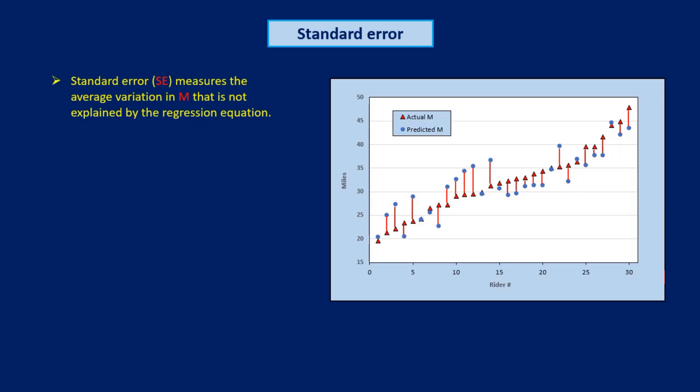To do this, Linus measures the difference between the actual M values and the values predicted by the equation for each rider. These differences are shown as red lines on this plot of actual M values for last summer's riders ranked from lowest to highest. Linus calculates SE as the square root of the sum of the squares of the differences, all divided by 30, which is the number of observations we have for M. Here's the equation. Using this equation, Linus finds that SE for the distribution of last summer's M values is 3.8. Now note that 3.8 is 12% of M-hat. We'll be using this percentage again a little later in the class.